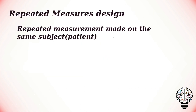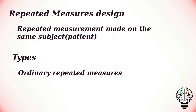Next, let us look at another experimental design: the repeated measures design. A repeated measures design is a design where repeated measurements are made on the same subject. There are a number of ways in which treatments can be assigned to living subjects. Repeated measures design may be categorized into two types: ordinary repeated measures, in which patients are assigned a single treatment and results are measured over time; and crossover design, in which patients are assigned all treatments and results are measured over time. The important factor that sets crossover design apart is that the same patients are in the control group and all of the treatment groups. For example, a patient undergoing a specific treatment is measured both before and after the treatment.